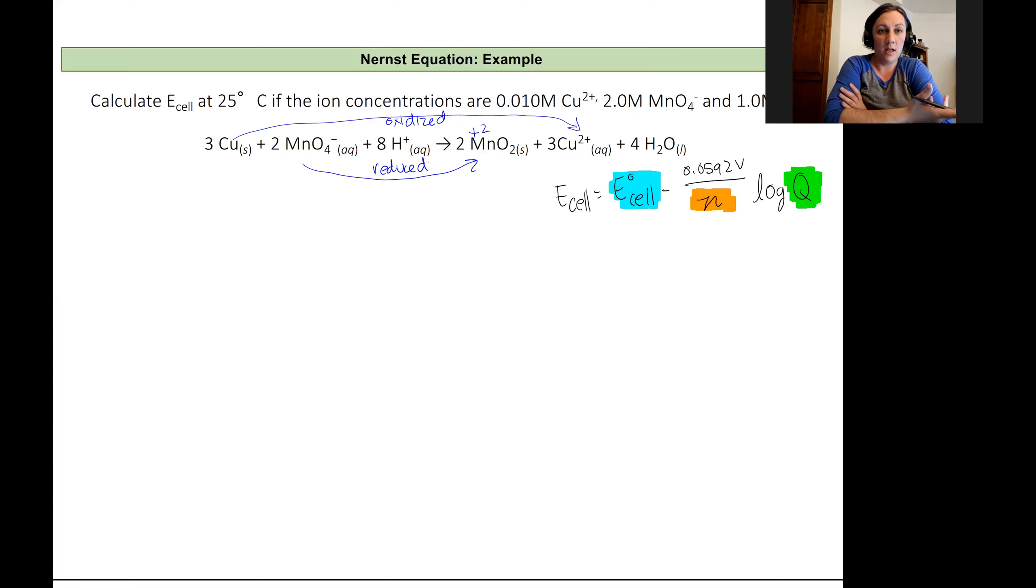For our cell potential, I'm going to look up our standard reduction potentials for each of our reactions. For copper plus two plus two electrons to copper metal, we have a standard cell potential equal to positive 0.34 volts. And the reduction potential for our manganese oxide has a cell potential equal to plus 1.68 volts. So it's clear why our manganese is reduced. It has a very positive cell potential for its reduction. That's the driving force for this reaction.